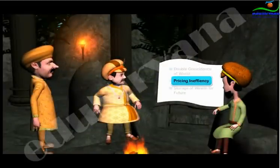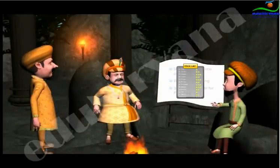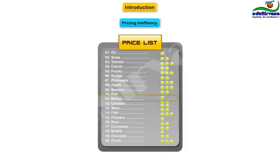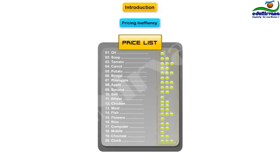To solve pricing inefficiency, create a price structure for all 20 products or skills against that something. One kilogram of wheat could be valued at some units of that something; one service could be valued at another number of units of that something — a common benchmark or yardstick against which things can be priced. This way, the number of prices to be tracked would reduce from 190 to just 20.